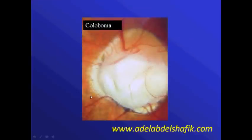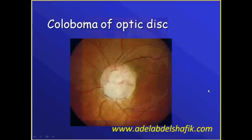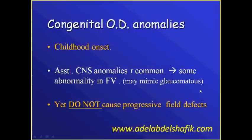Another example is coloboma of the disc. In general, congenital disc anomalies start in childhood, usually associated with CNS anomalies, inducing some abnormalities in the visual field that may mimic glaucoma. Yet the characteristic thing is that the field changes do not progress.